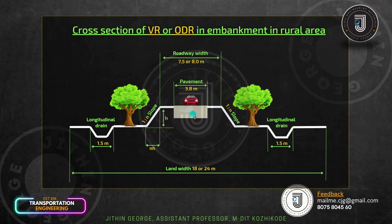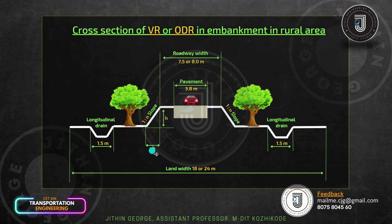If you want to discuss the embankment, the slope is 1 in N — that is 1 vertical to N horizontal. If you look here, we have an embankment in the depth. This horizontal distance is N.